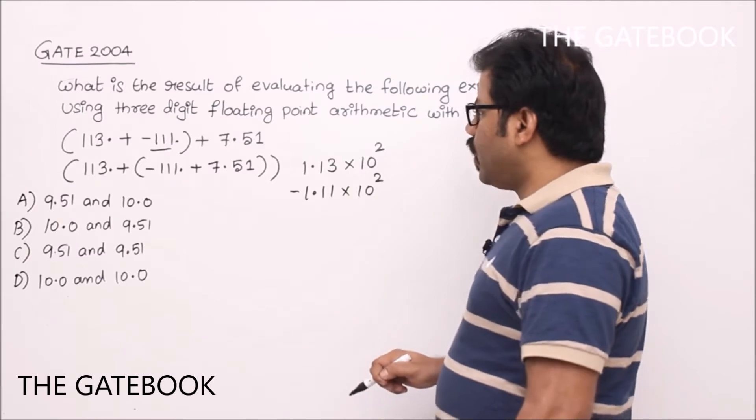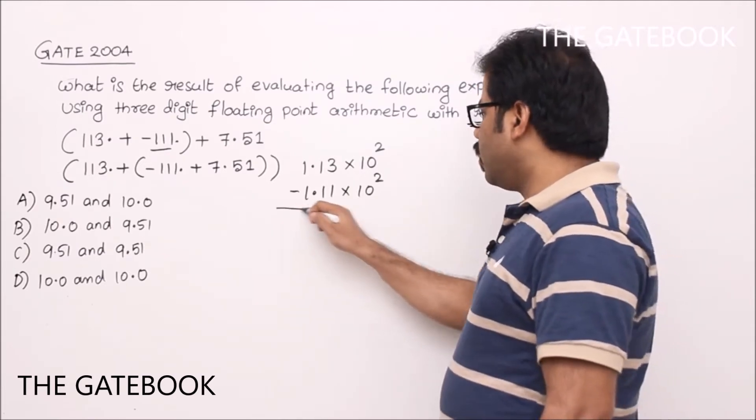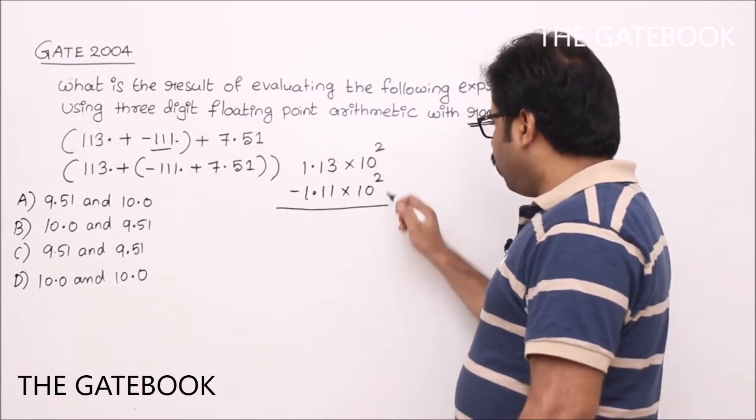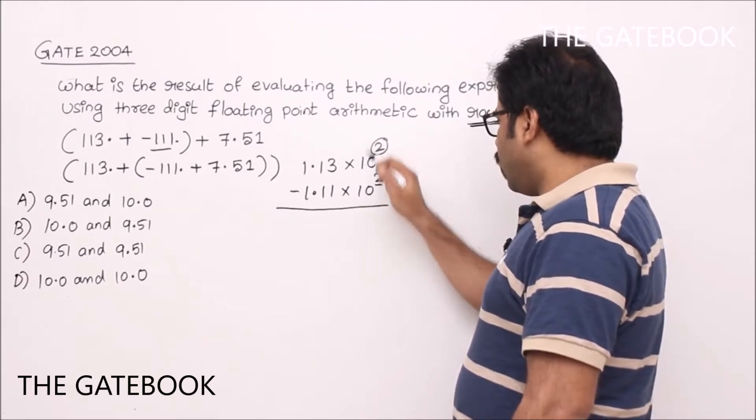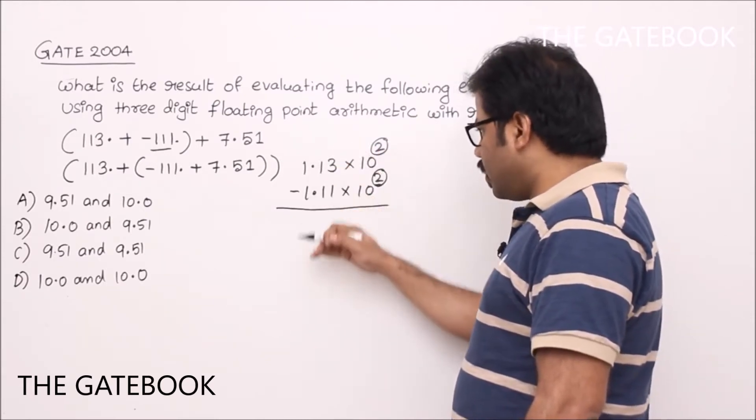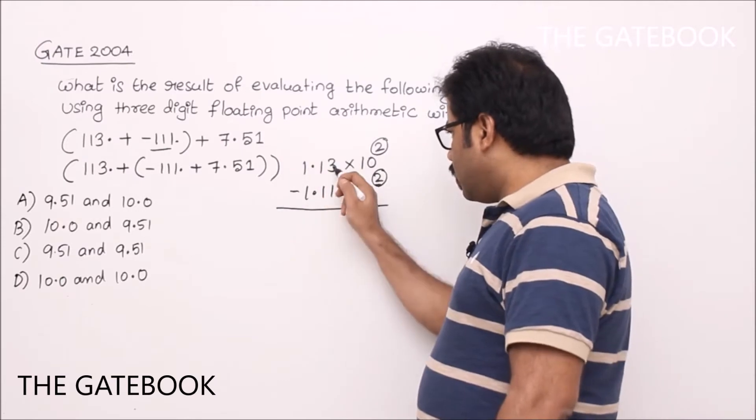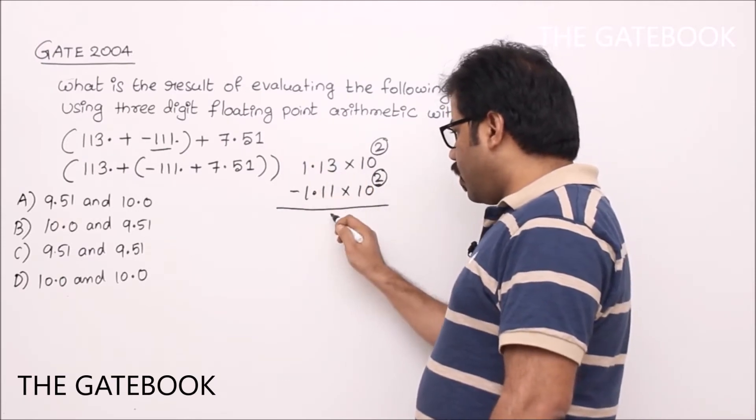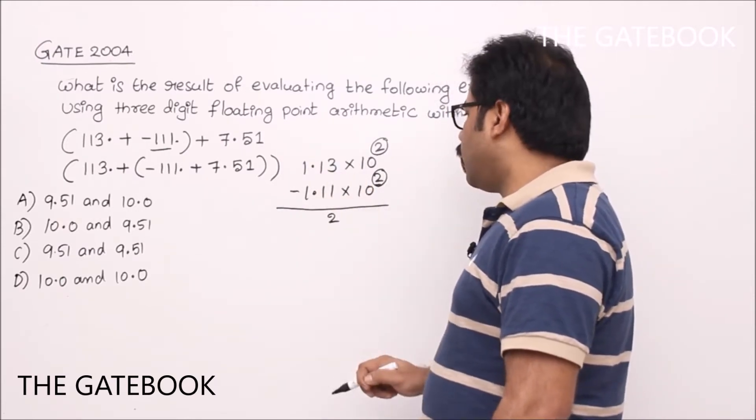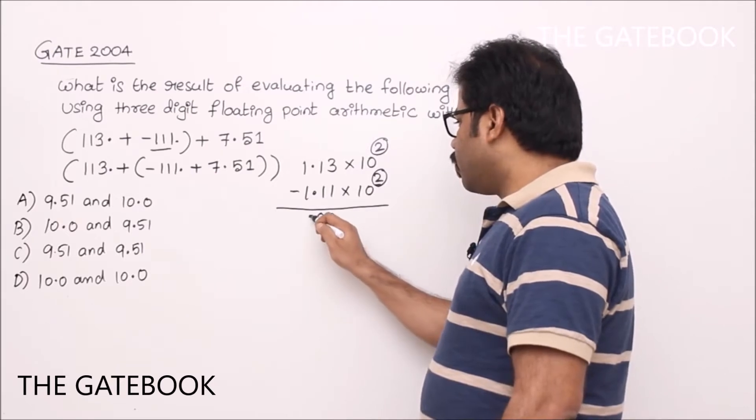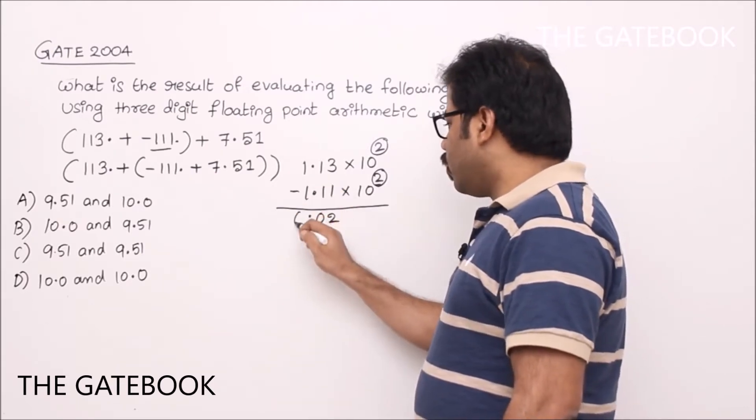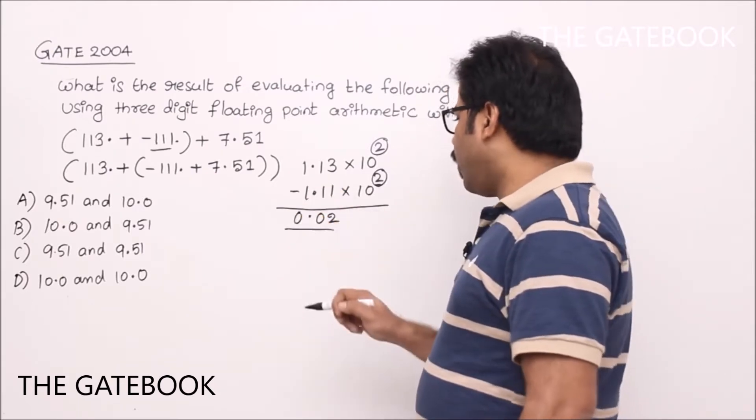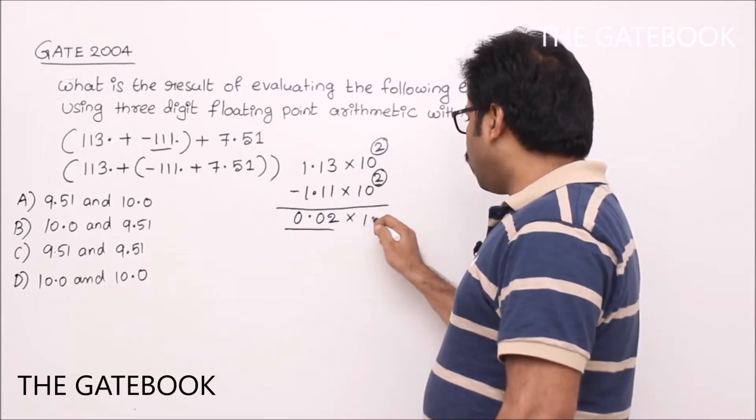So first we have to do subtraction. When I do subtraction, see exponents are equal. Then directly we have to subtract the mantissas. So here mantissa is 1.13 and 1.11. Let us do the subtraction. 3 minus 1 is 2, 1 minus 1 is 0, 1 minus 1 is 0. So you got 0.02 into 10 to the power of 2.